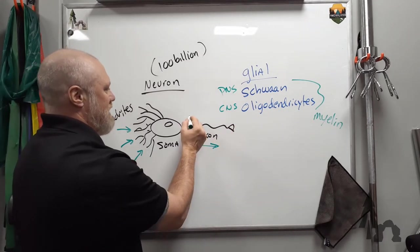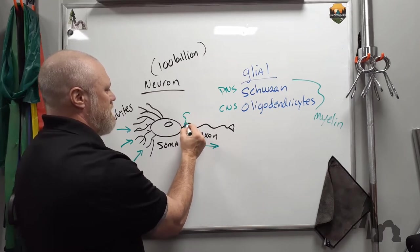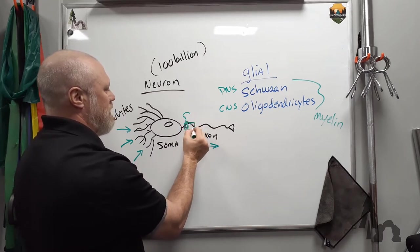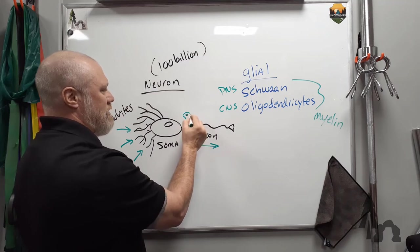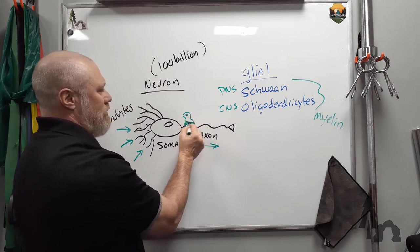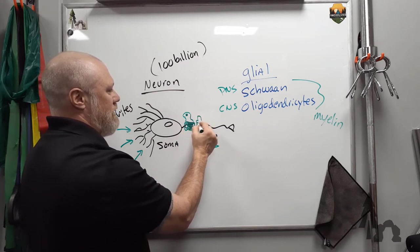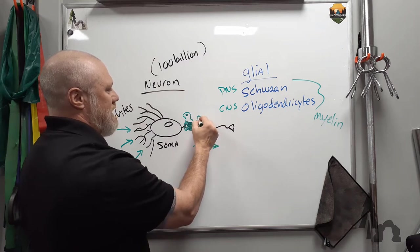So basically what happens is the Schwann cell will produce a series of, like it'll roll around, there's this little cell body, and it'll roll around in layers around the axon. And then there's another Schwann cell here that'll roll around like beads on a string.